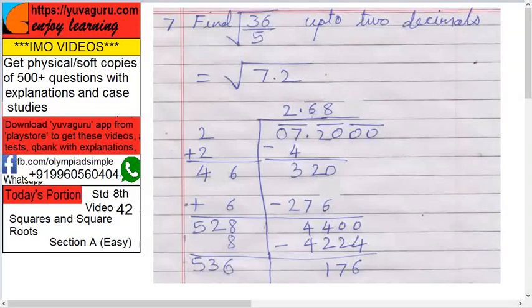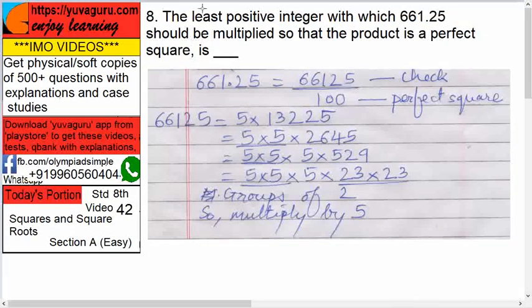Next: the least positive integer with which 661.25 should be multiplied so that the product is a perfect square. Means some number is to be multiplied with this number so that the answer we get is a perfect square.